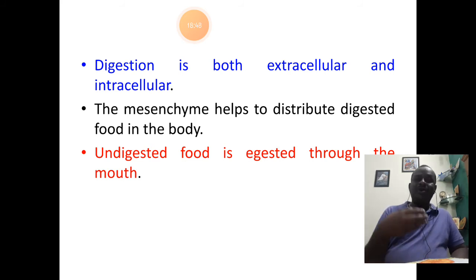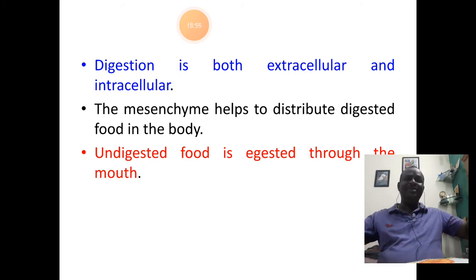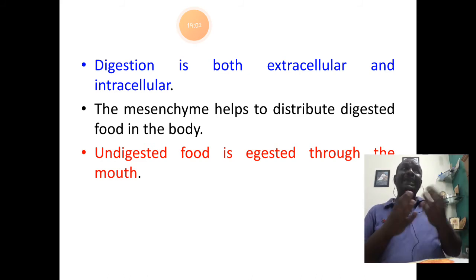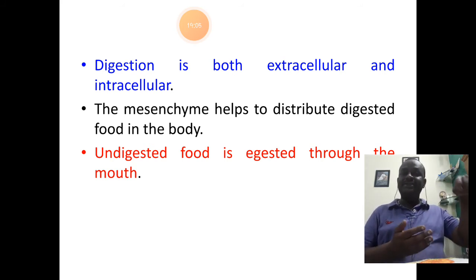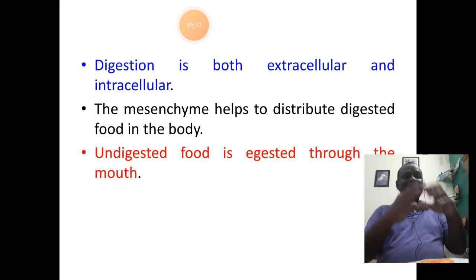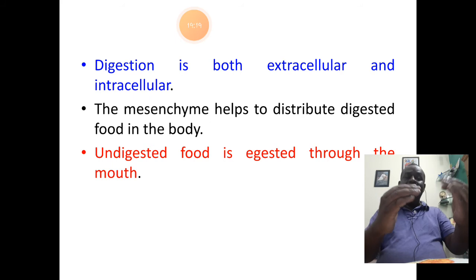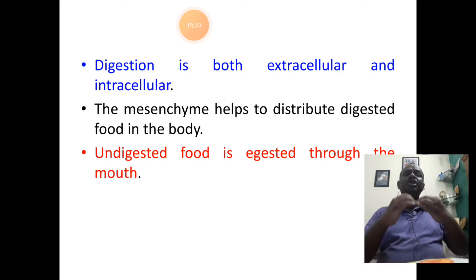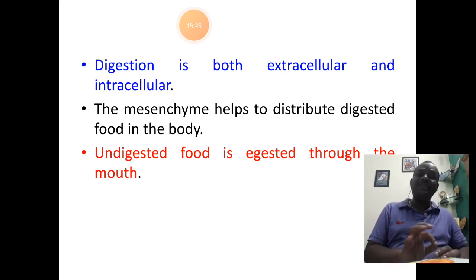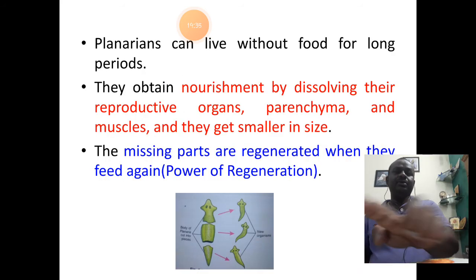The mesenchyme cells are responsible for distributing the digested food to the body and supplying energy to neighboring cells. Whatever undigested food remains in the digestive canal — in the diverticula — is collected back, sent through the pharynx, and ejected through the mouth. So egestion of undigested food from the digestive canal is done through the mouth.